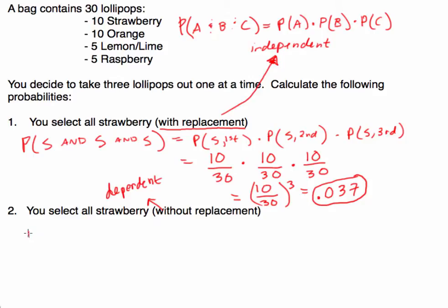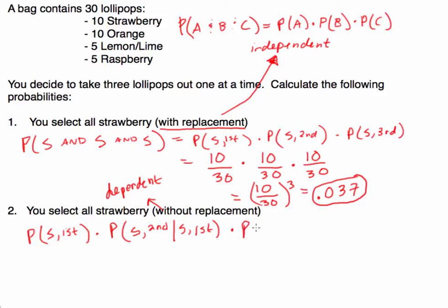We want to calculate: first, that we select a strawberry on the first pick. Then, without putting that strawberry back, we calculate the probability of another strawberry on the second pick given that a strawberry was selected first. Finally, the probability of a strawberry on the third pick given that strawberries were selected on both the first and second picks.